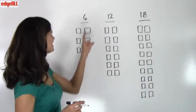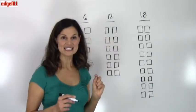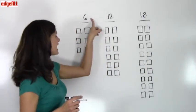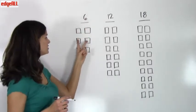So let's look at the even numbers 6, 12, and 18. If I take 6 objects and put them in pairs of 2, I'll have 1, 2, 3 pairs of 2 with none left over.